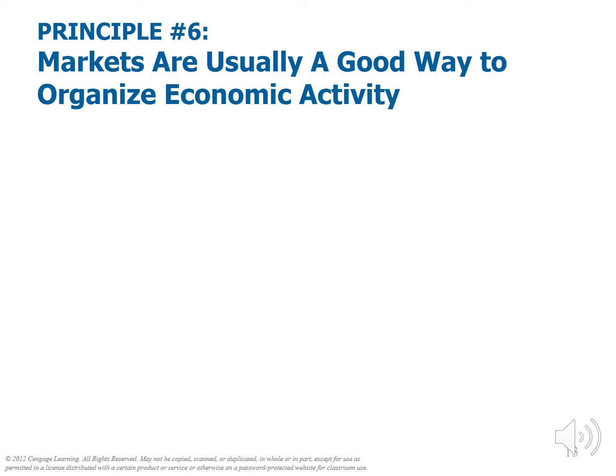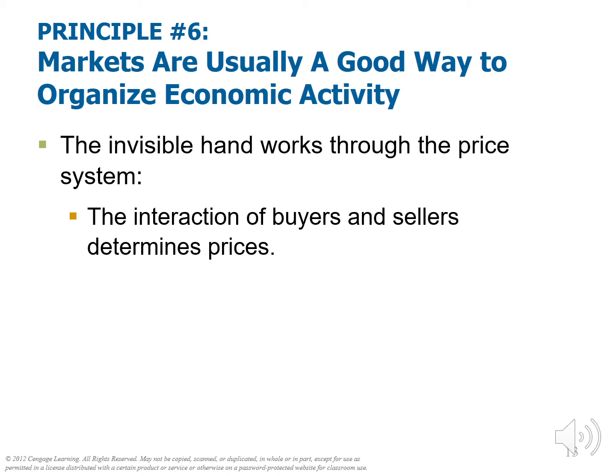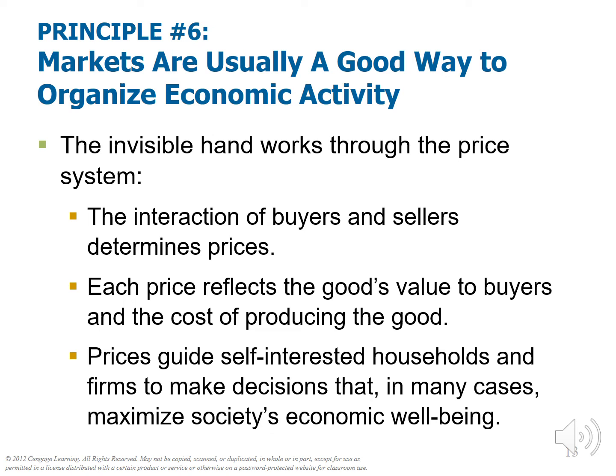Principle number six: the invisible hand works through the price system. The interaction of buyers and sellers determines prices. If there are many sellers and not many buyers, the price will fall, reflecting that society doesn't really want much of that good. If there are many buyers and very few sellers, the price will rise, reflecting that supply hasn't met social want. Each price reflects the good's value to buyers and the cost of production. Prices guide self-interested households and firms to make decisions that, in many cases, maximize society's well-being.